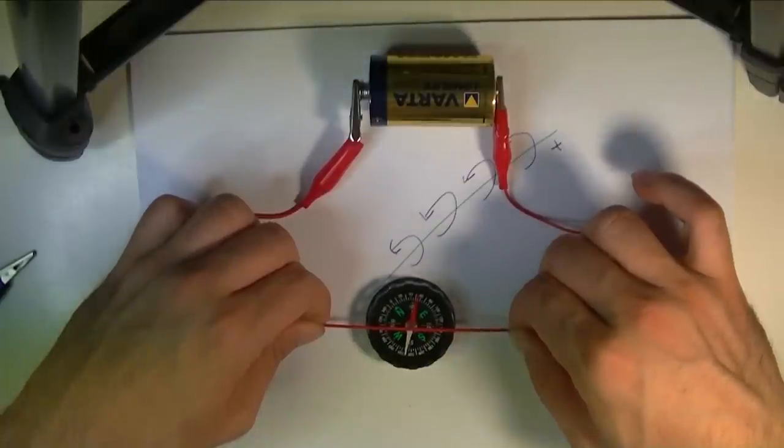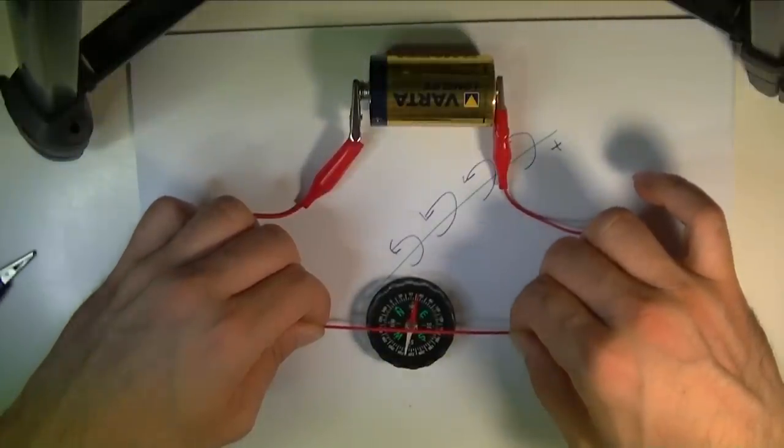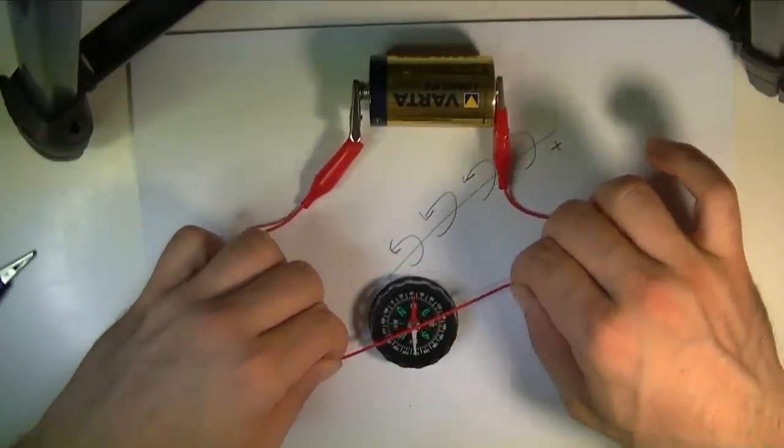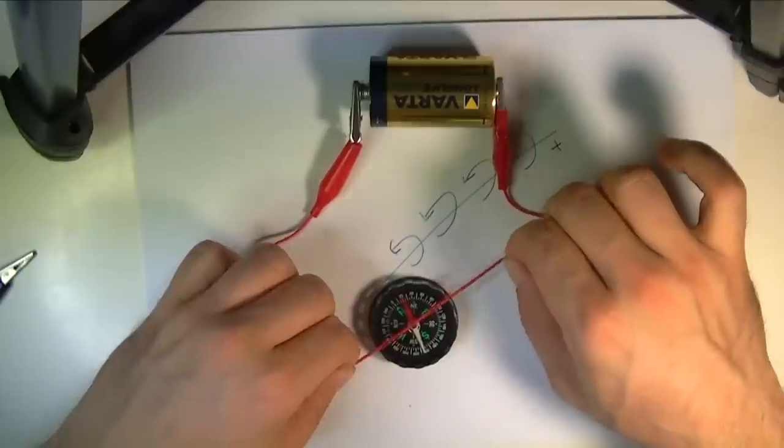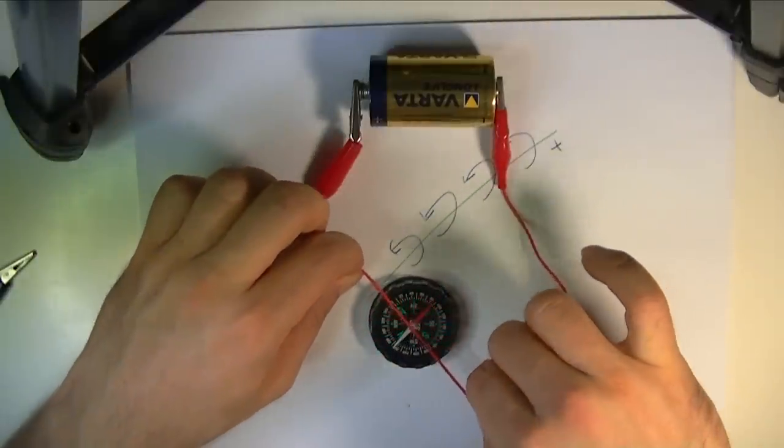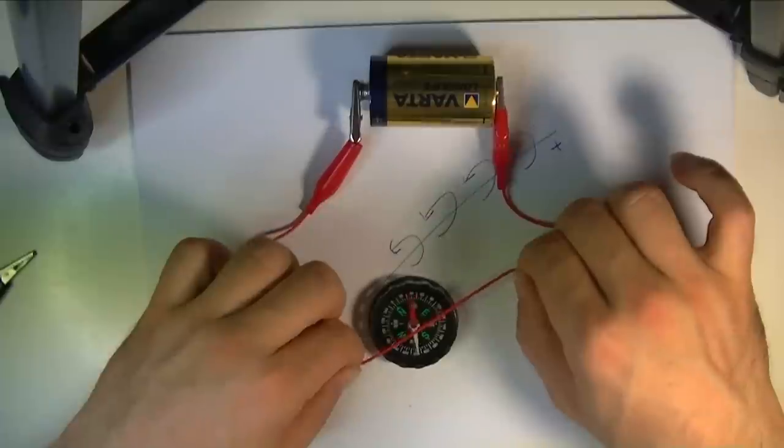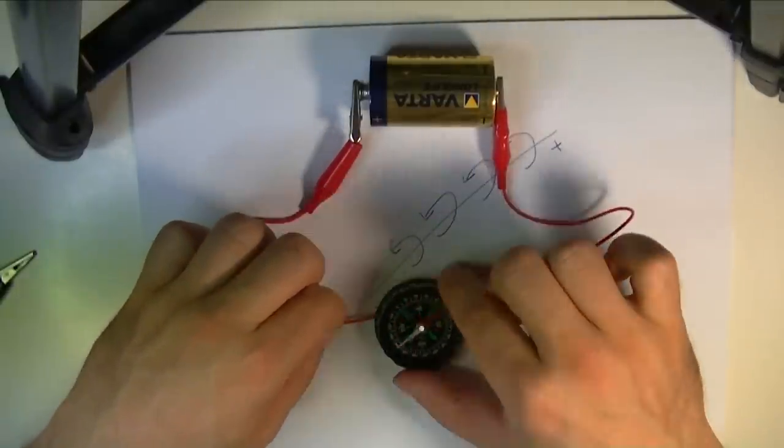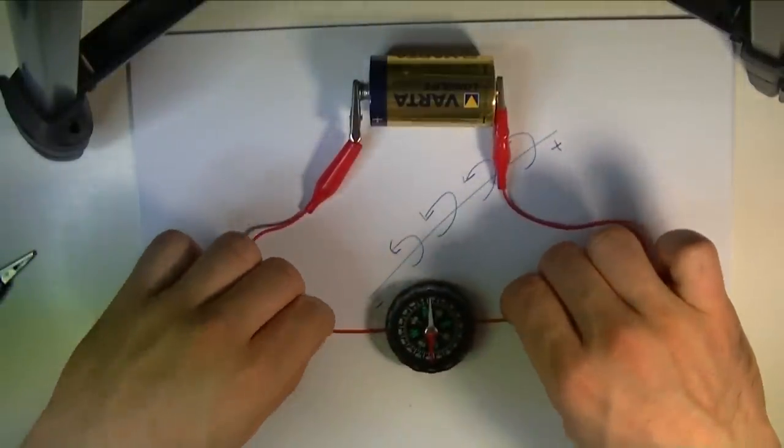So, right now the red is facing the battery. The red north, and as you can see I'm turning the needle with the wire and the red is going to change directions if I put the wire underneath the compass and that's it.